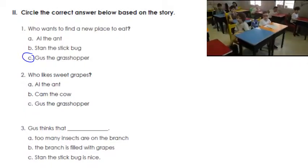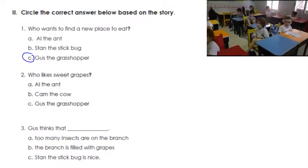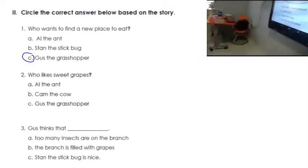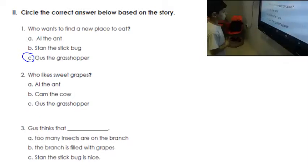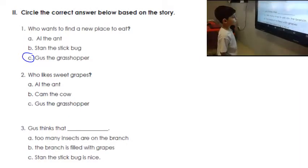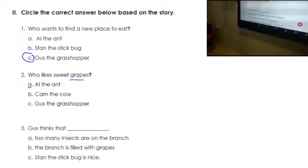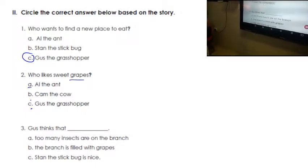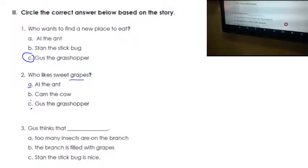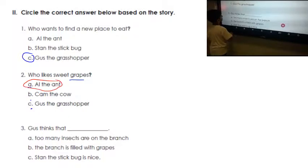Let me have Ibrahim come to the board. Read number two. Who likes sweet grapes? Is it A, all the ants, B, Cam the cow, or C, the grasshopper? What is the right answer? The ants. Excellent. Can you circle it? Bravo Ibrahim, brilliant.